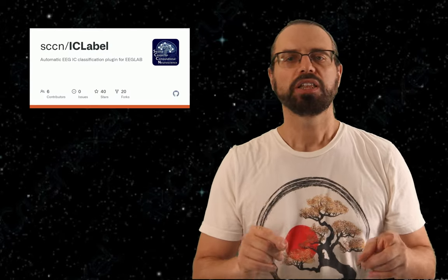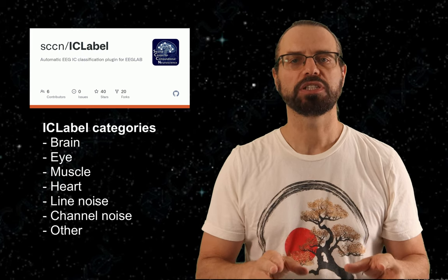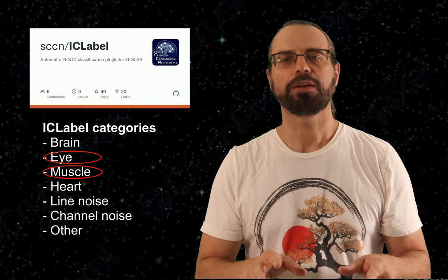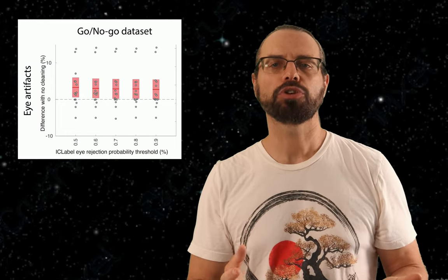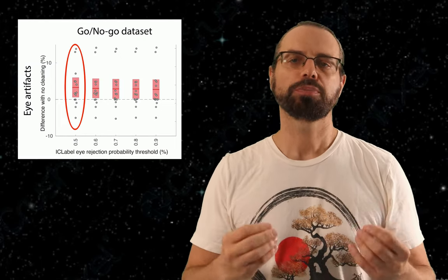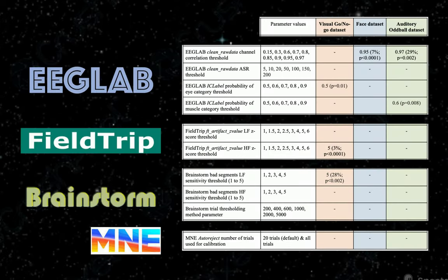Finally, we used independent component analysis and an automated method to label and remove artifactual components. The ICLABEL plugin returns the likelihood of a component to be an artifact in different categories. We tried different threshold values for removing eye artifacts and muscle artifacts. For example, when we set the probability of having muscle or eye components above 50% or 60%, we observed a modest improvement for some datasets. However, 50% is a low confidence threshold that would probably not be used in practice, where we would typically use values of 80% or above.